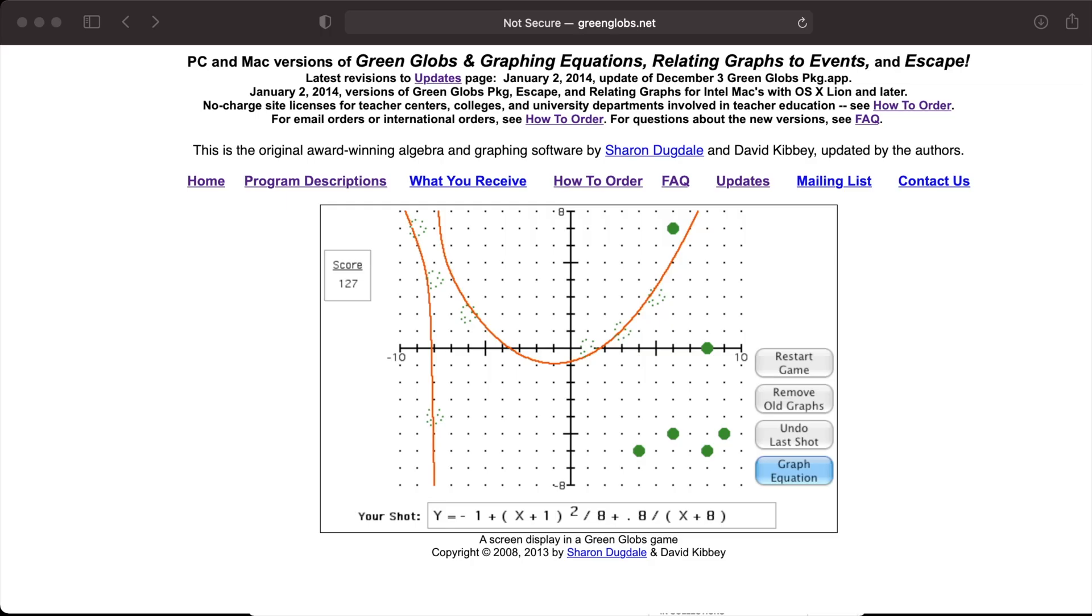Green Globs and Graphing Equations is a game which challenges the student to write equations to fire a beam whose graph intersects globs on the Cartesian plane. You can find the current version at greenglobs.net. They sell both personal licenses for home use and also licenses for school districts and universities.